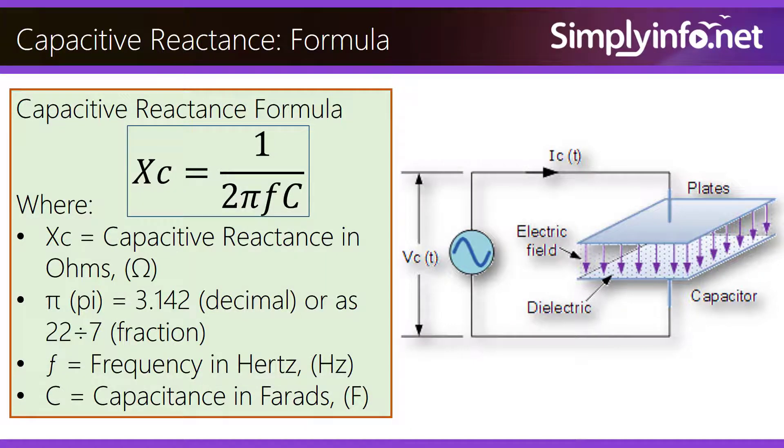Capacitive Reactance formula: Xc equals 1 divided by 2πfC, where Xc is capacitive reactance in ohms, π equals 3.142 decimal or 22 divided by 7 fraction.